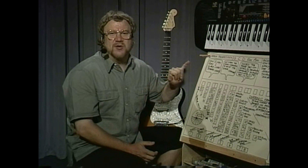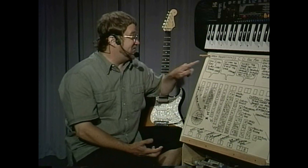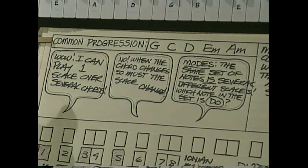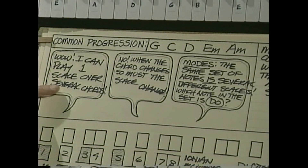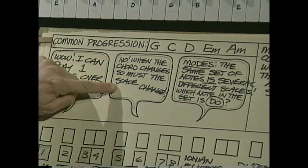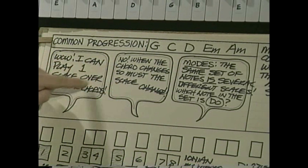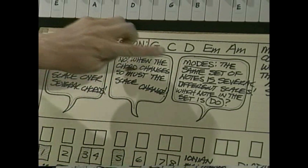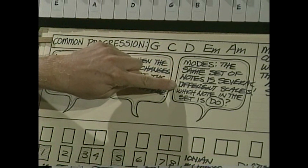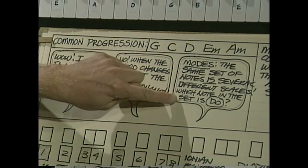What this has to do with playing improvisationally, composing, or analyzing melodies has a lot to do with this. A lot of times when you start jamming you think you can play one scale over several different chords, but that's not true. What you find out is there's actually a separate scale for each chord that you play. The same set of notes actually is several different scales — it's just a matter of which note in the set is Do.